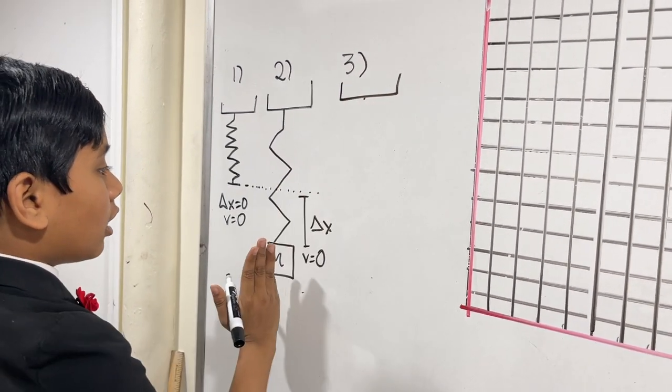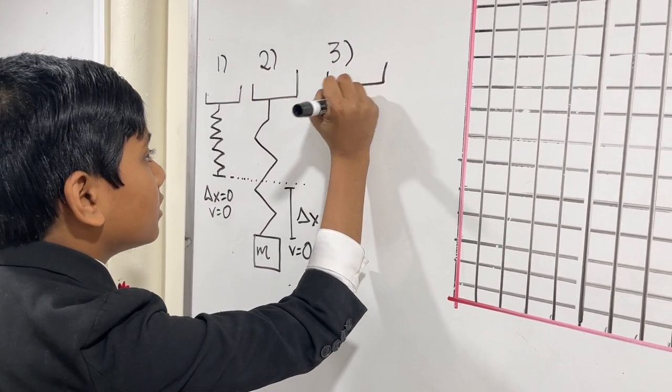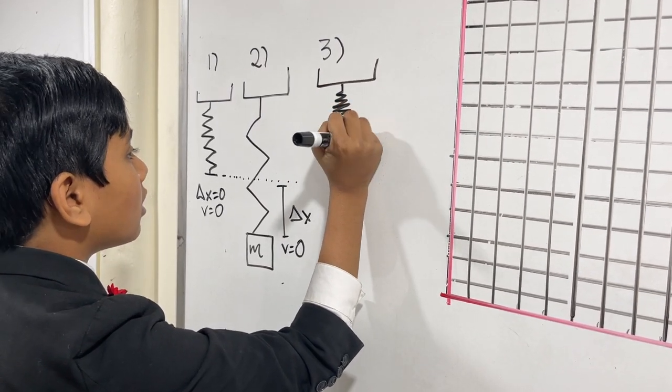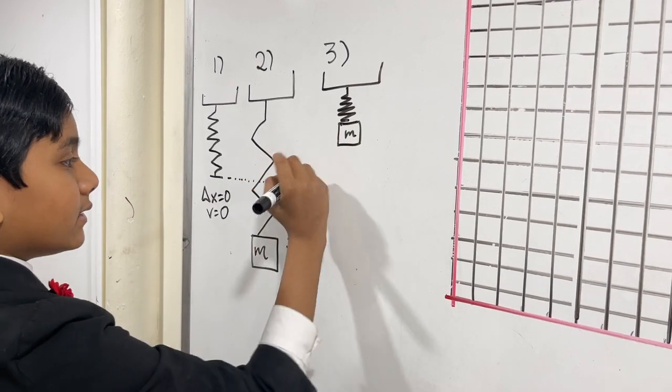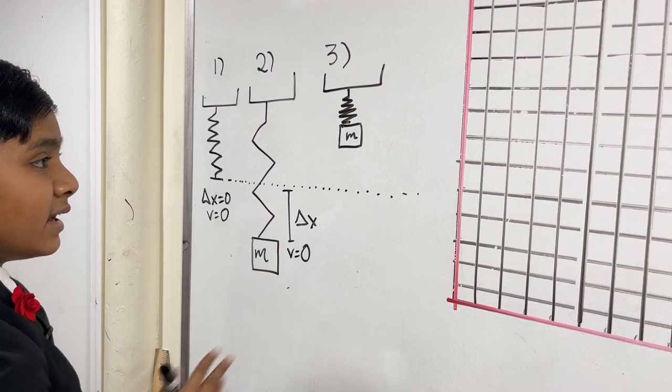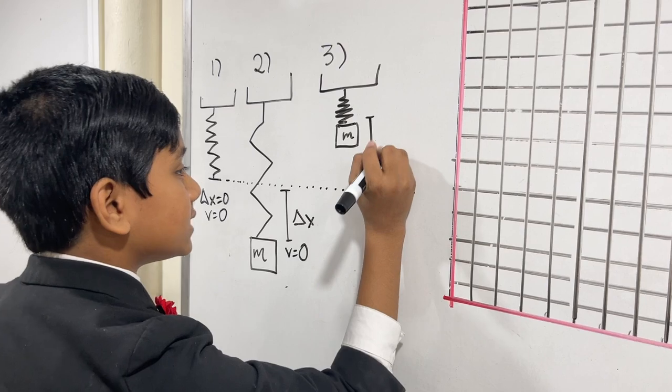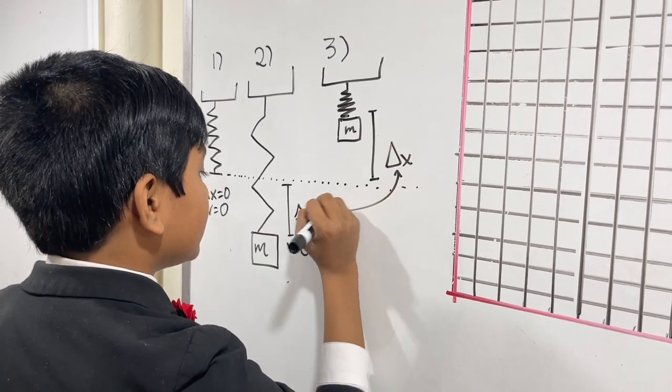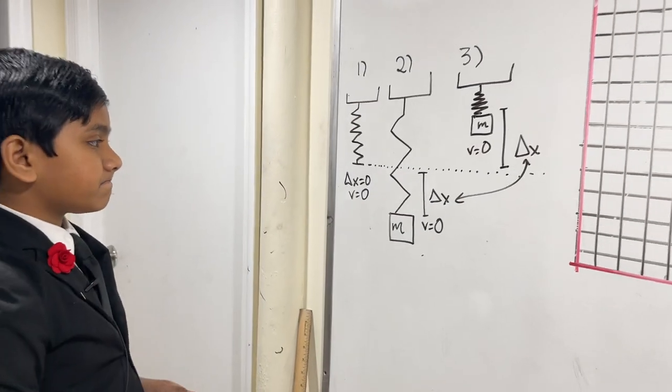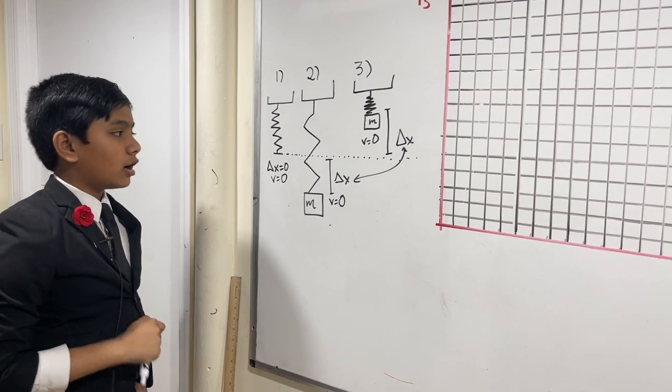Now, we place a mass onto it, and it starts oscillating. So, state number 2 looks like this. Let's say we have this mass, m, and putting it on, we see that it has deviated a length of delta x from its original position. And here, the velocity is actually 0, as well, because this is its max oscillation.